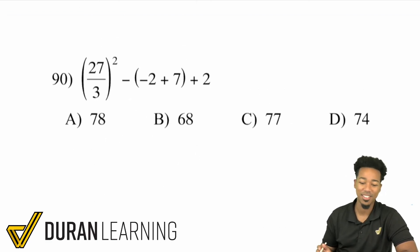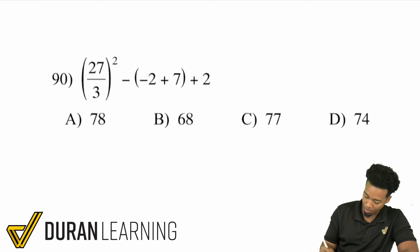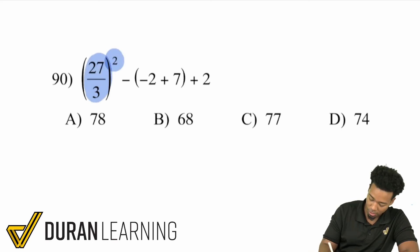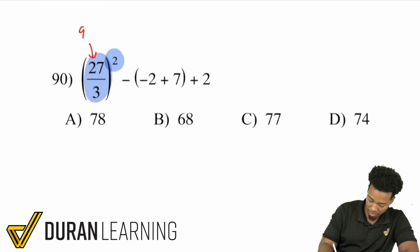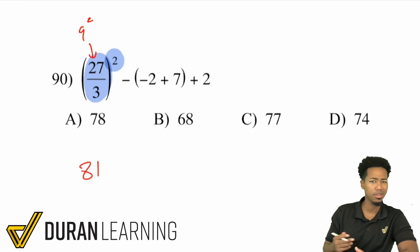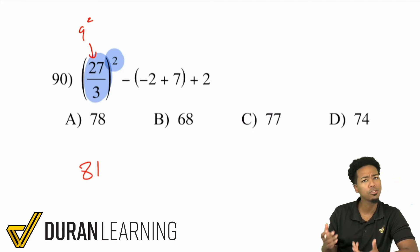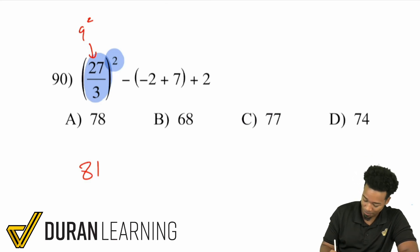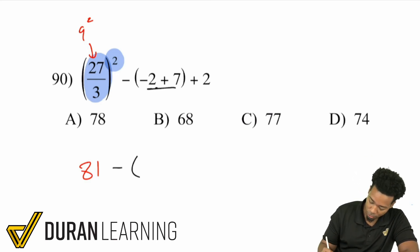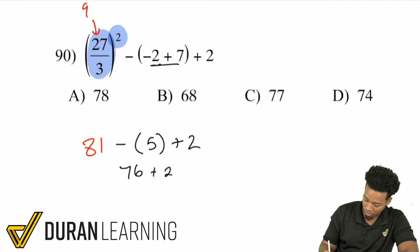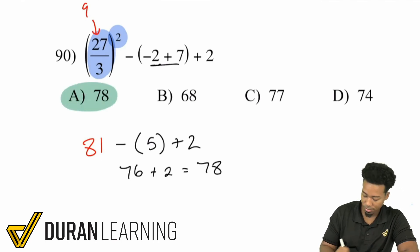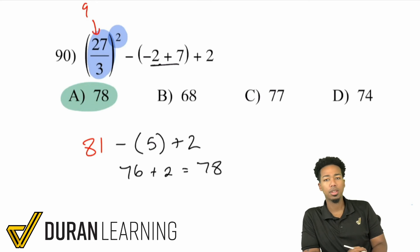Let's find a problem with an exponent. Problem 90: we have a group to take care of first, and then an exponent. 27 divided by 3 is 9, and 9 squared is 81. What looked complicated with a fraction and an exponent turned out to be straightforward. Then minus negative 2 plus 7 becomes positive 5, so 81 minus 5 is 76, and 76 plus 2 is 78.